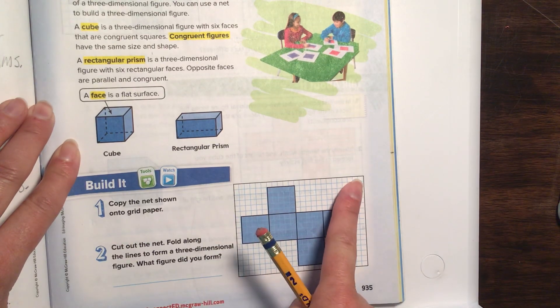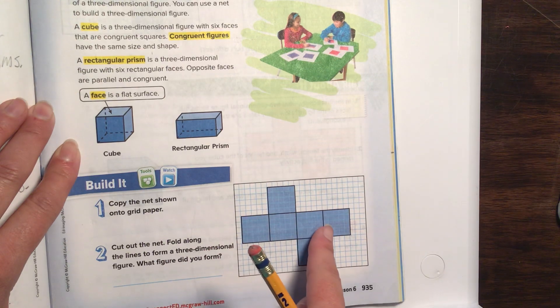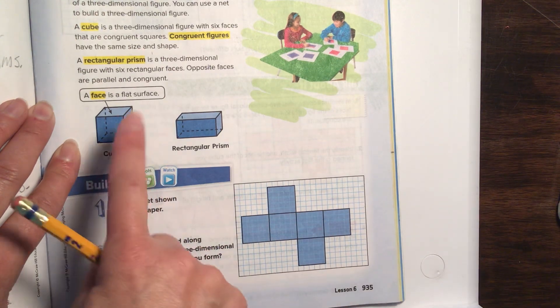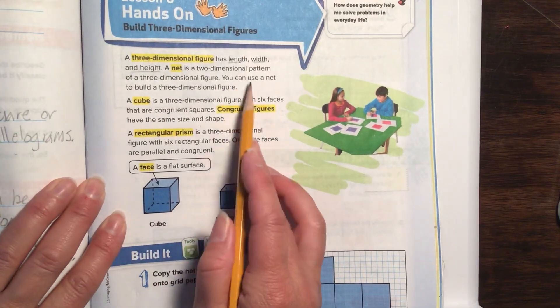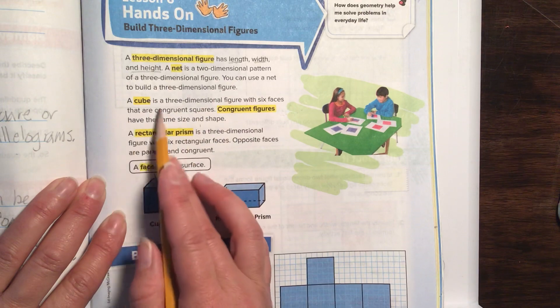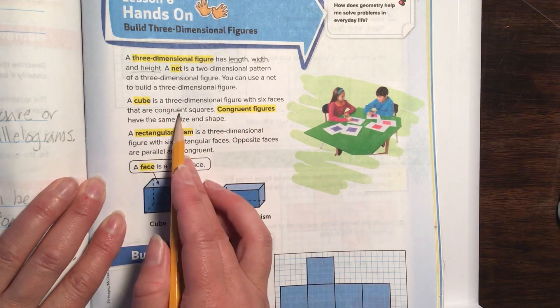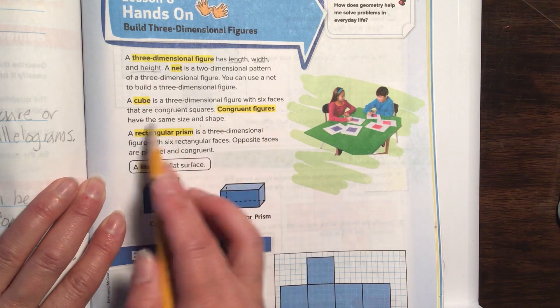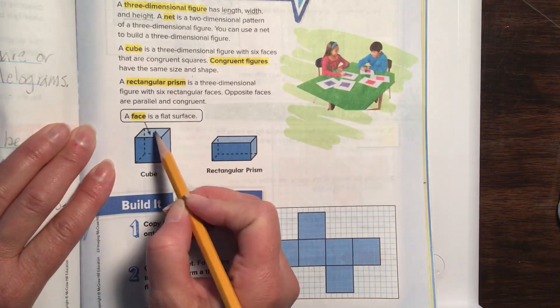It is a two-dimensional figure, which means it's flat, but if we were to cut it out and bend on each of these black lines, it would make a three-dimensional cube. You can use a net to build a three-dimensional figure. A cube is a three-dimensional figure with six faces that are congruent squares. Congruent figures have the same size and shape. For example, a face is a flat surface.